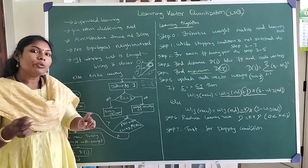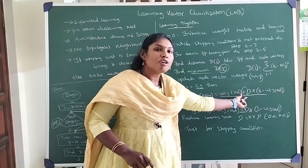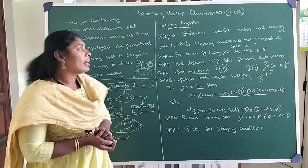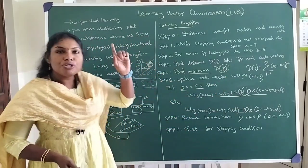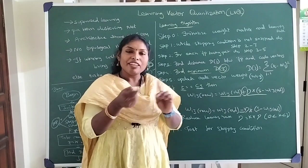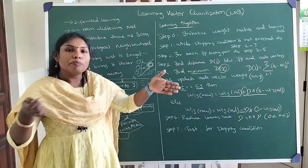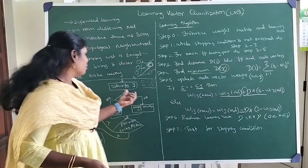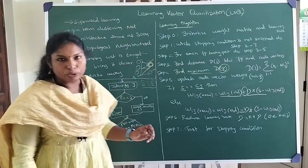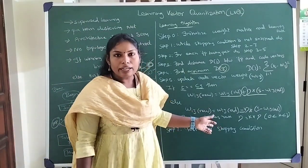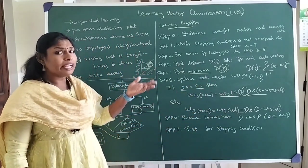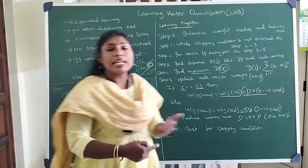The difference from self-organizing map is that in SOM we update weights with positive values for the winning unit and nearby neurons. In Learning Vector Quantization, we use just one winning unit. We check whether it equals the target. If equal, we bring it closer by updating with a positive value so that next time a similar input falls into the same cluster. If not predicting correctly, we move it away by assigning negative values in the weight increment.